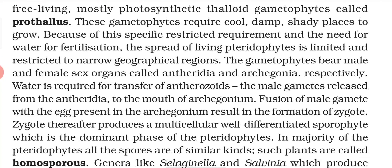Water is always needed to transfer the antherozoid — the male gamete released from the antheridia — to the mouth of the archegonia. When fusion of male and female gametes occurs in the archegonia, it results in the formation of a zygote, which then produces a multicellular, well-differentiated sporophyte — the dominant phase of the pteridophyte. In the majority of pteridophytes, all spores are of the same kind; these are known as homosporous.